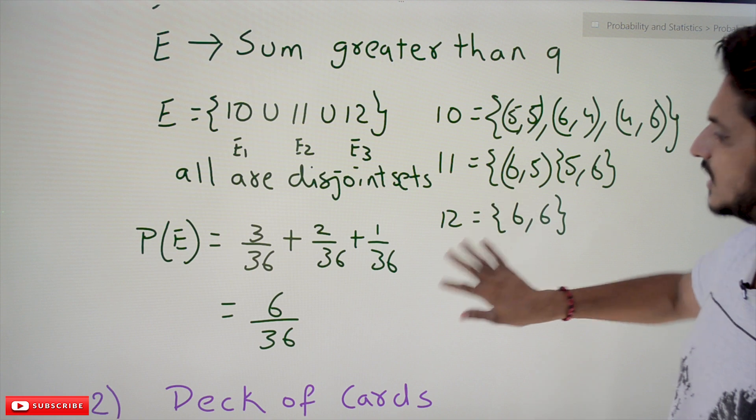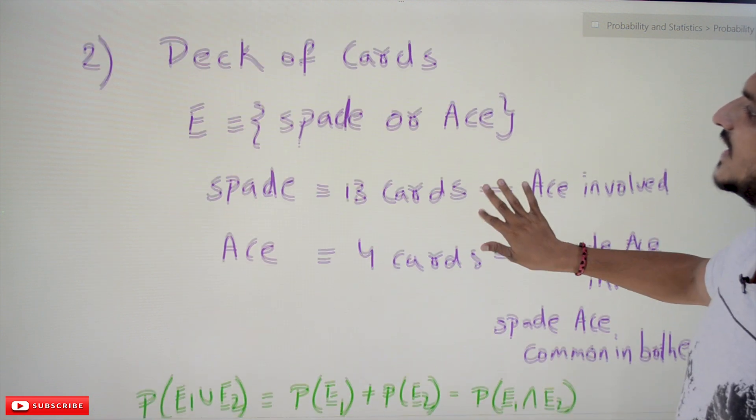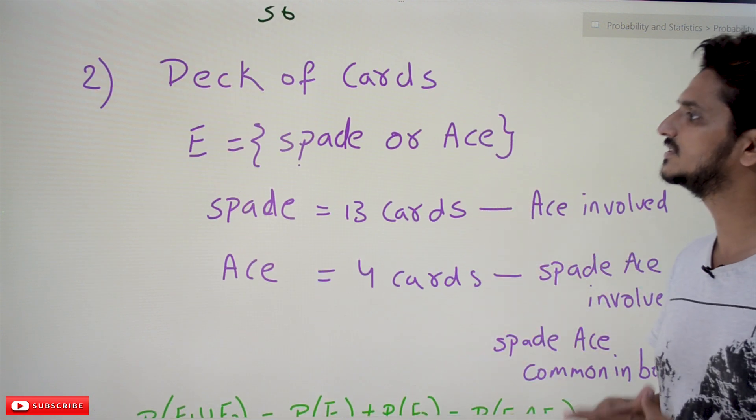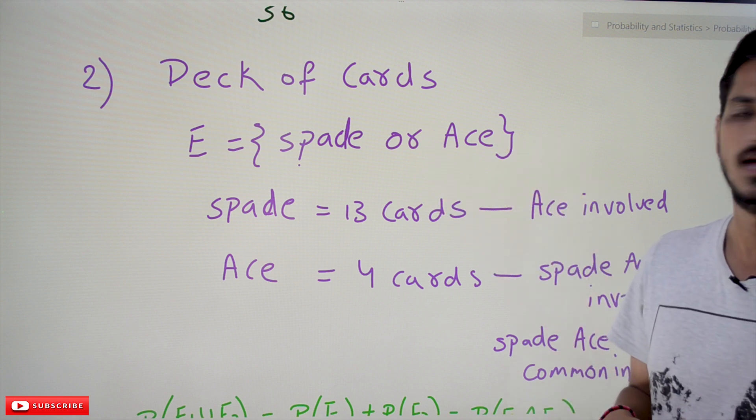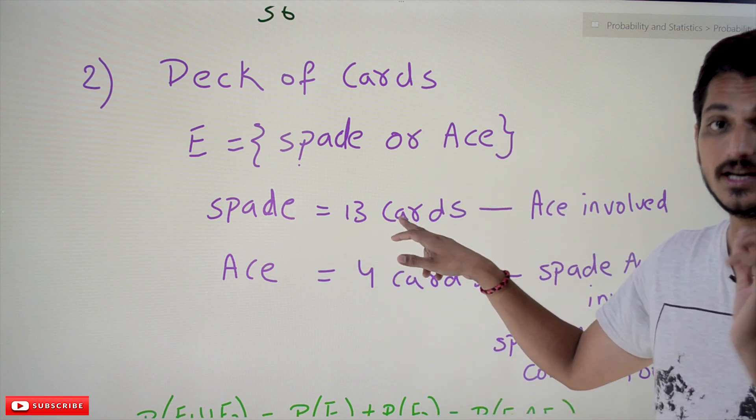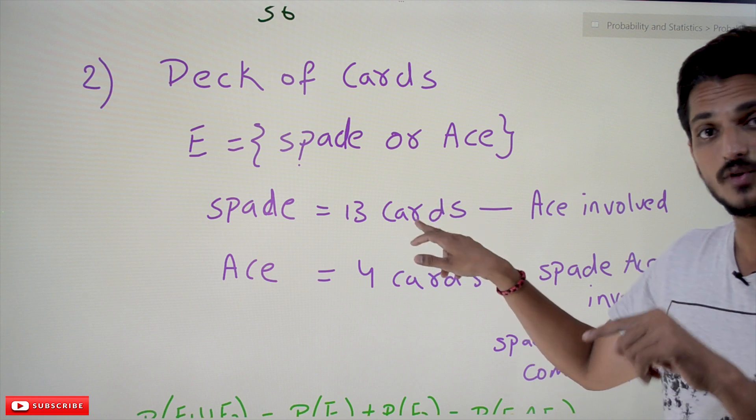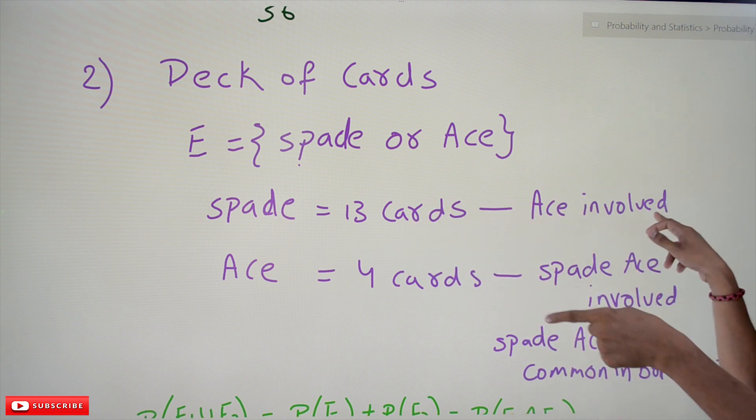Coming to the second example: take a deck of cards. Our event E is given as spade or ace. In spade we have 13 cards. One ace is involved in those 13 cards.